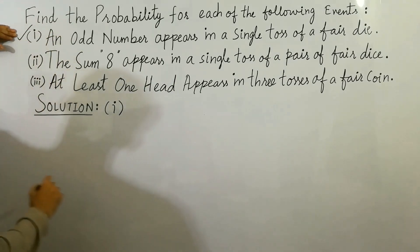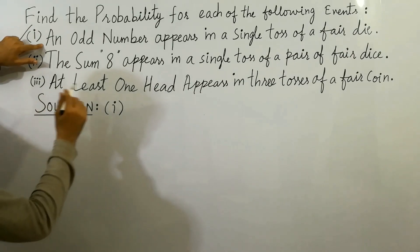First question here, how to find the probability if an odd number appears?